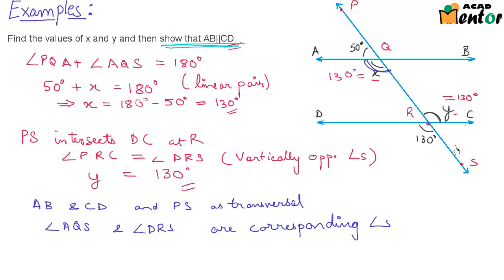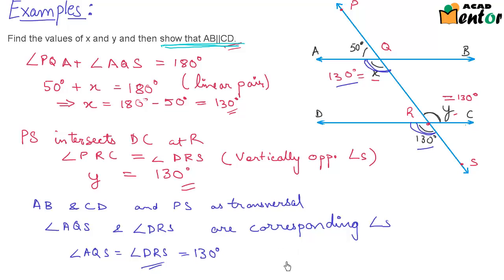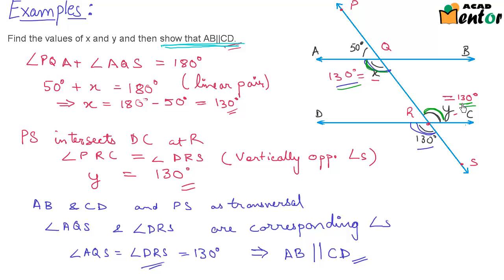This angle AQS and this angle DRS are corresponding angles, and both are equal to 130 degrees. So angle AQS equals angle DRS equals 130 degrees — both measure 130 degrees, hence they are equal to each other. When two corresponding angles are equal, AB is parallel to CD. That's how you prove two lines to be parallel: show that the corresponding angles are equal. Another way could have been to note that angles X and Y are alternate interior angles, both equal to 130 degrees, and when alternate interior angles are equal, the lines are parallel.